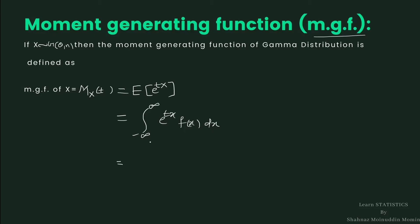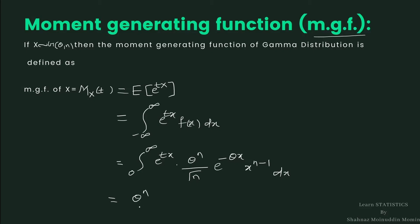Since x is gamma, the range of x is from 0 to infinity. So it is integration from 0 to infinity of e raised to tx into theta raised to n divided by gamma(n), into e raised to minus theta x, into x raised to n minus 1 dx. Since theta and n are constants, we shall take the constants outside the integration sign: theta raised to n divided by gamma(n), integration from 0 to infinity.